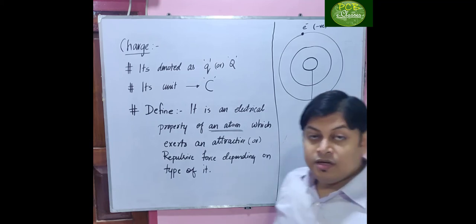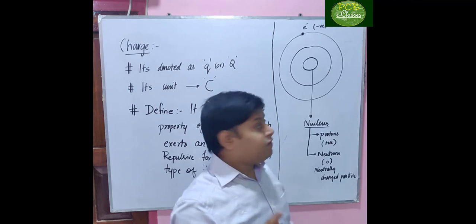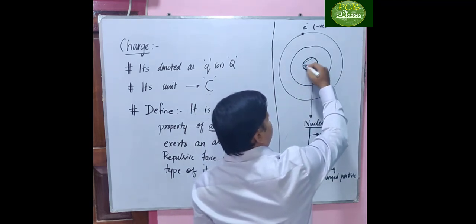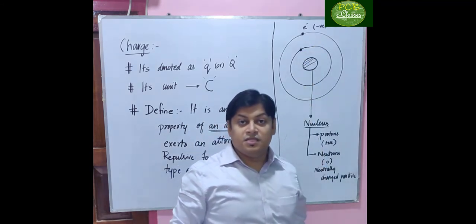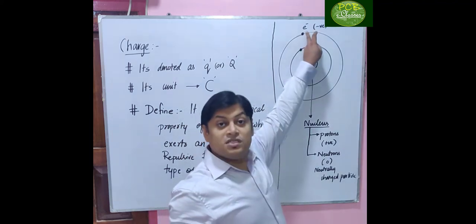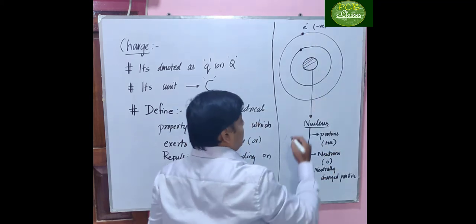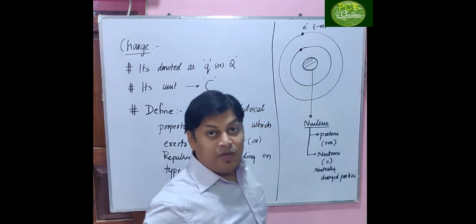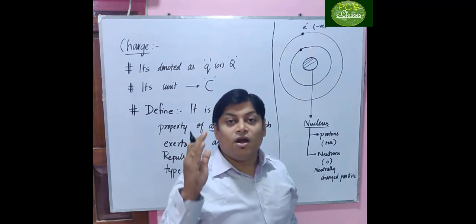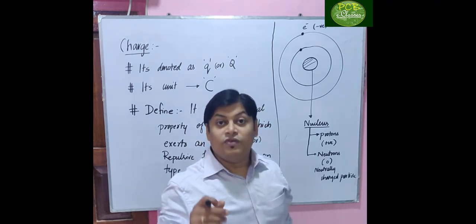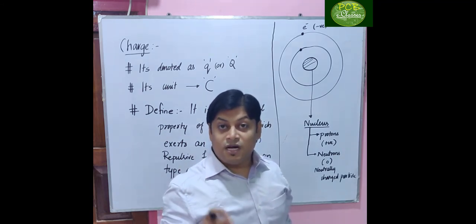Electrons revolve around the nucleus in the energy shells — they are movable in nature. Can we say protons are movable? Never — they are inside the nucleus and cannot come out; they are immovable in nature. So protons cannot move, whereas electrons can move. This means negative charge always moves, whereas positive charge doesn't move.